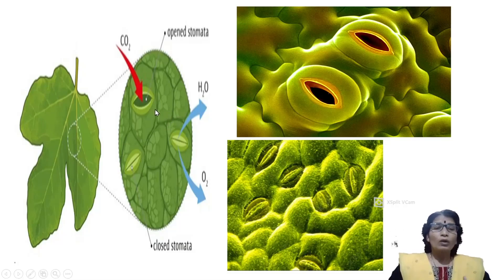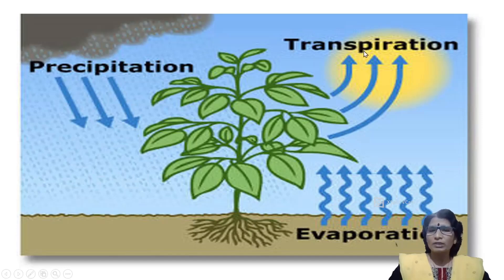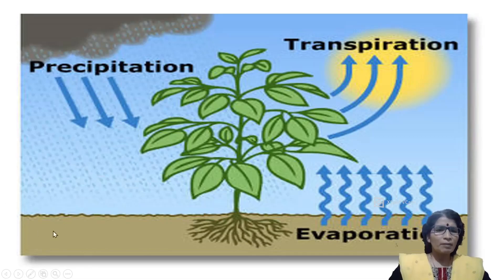When the plant is exposed to stresses, stomata close. Rainwater enters the soil and is absorbed by the plant, and the excess water is released as vapor through transpiration. Evaporation also occurs from soil surfaces. If the soil contains less water during summer, due to very hot conditions, continuous evaporation decreases the water content in soil.